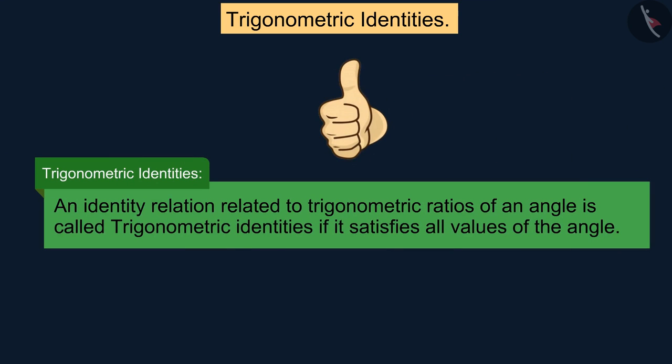Well done! An identity relation related to Trigonometric Ratios of an angle is called Trigonometric Identity if it satisfies all values of the angle.